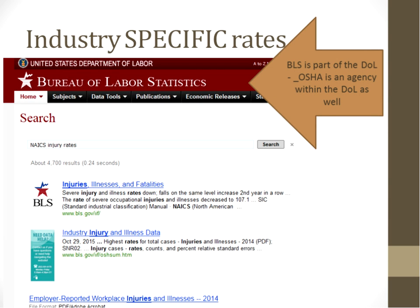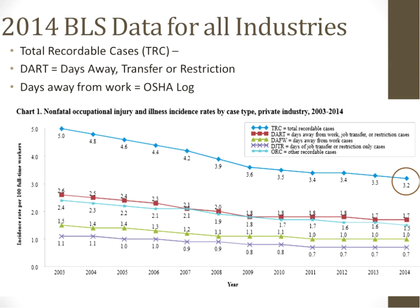We get our industry-specific rates from the Bureau of Labor Statistics, which is part of the Department of Labor — just another agency under the DOL, like OSHA. By clicking those links, you can get your industry-related injury and illness rates, severity rates, lost workday rates, and fatality rates. These are used to put emphasis programs in place, see what's working, what isn't, and support data-driven decisions.